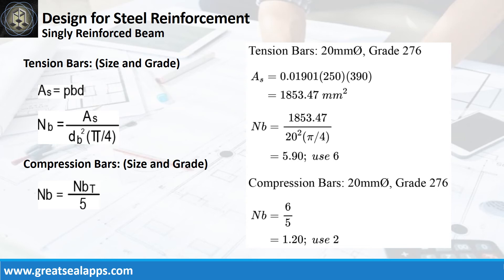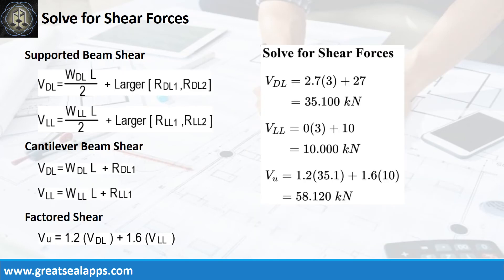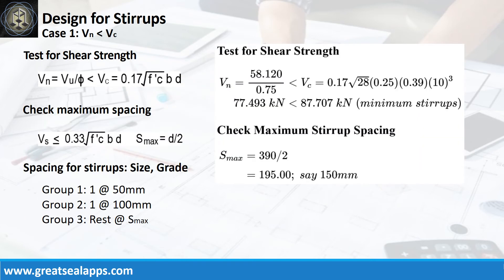The shear force from dead load is 35.1 kN and live load is 10 kN, for a factored shear force of 58.12 kN. The nominal shear force is 77.493 kN, less than 87.707 kN concrete capacity. The maximum stirrup spacing is 150 mm. The spacing of stirrups are as follows: 1 at 50 mm, 1 at 100 mm, rest at 150 mm.